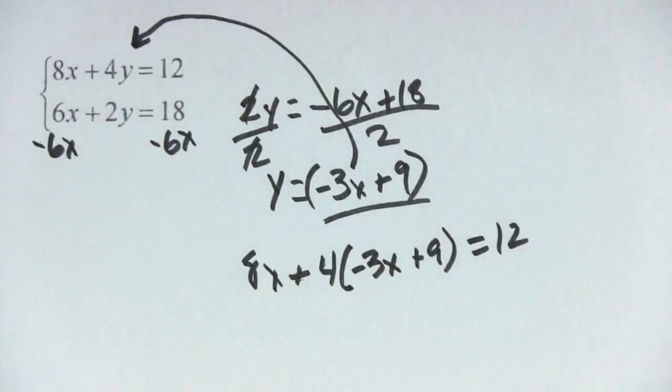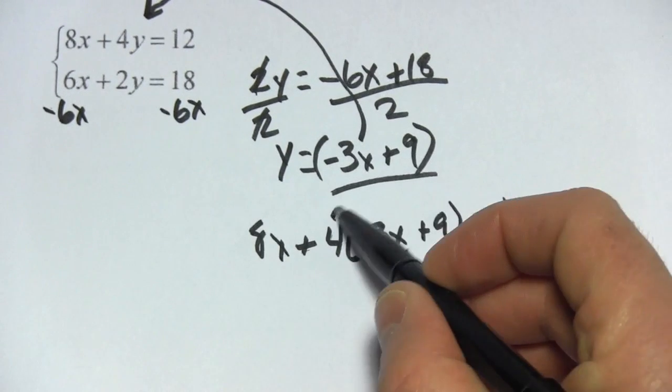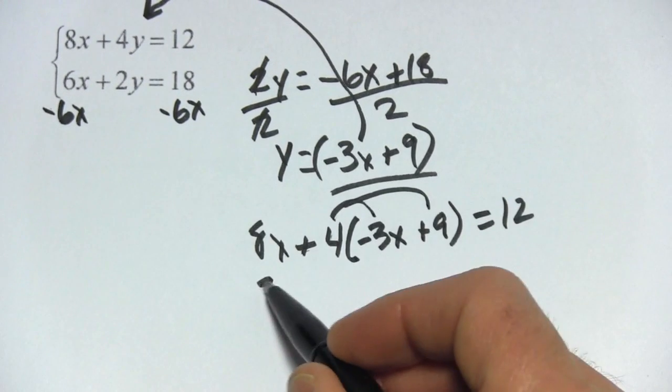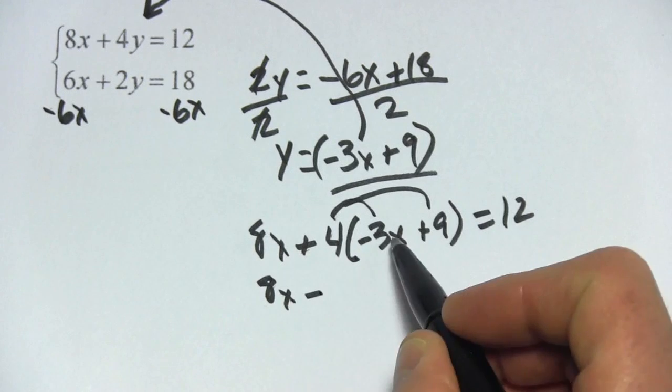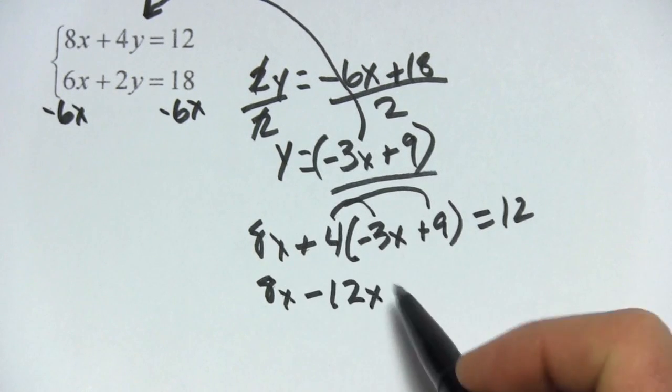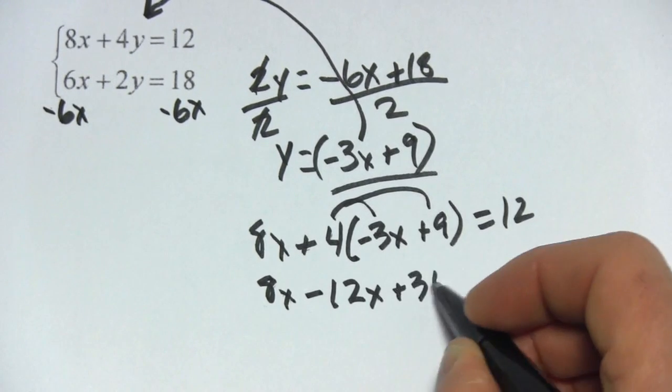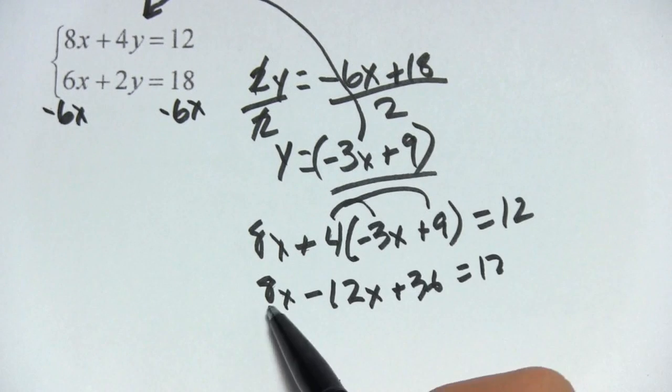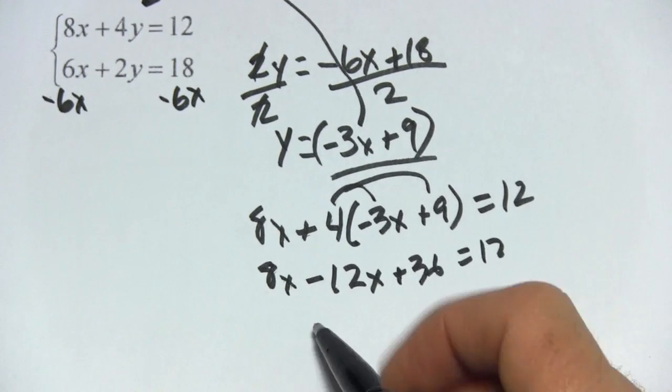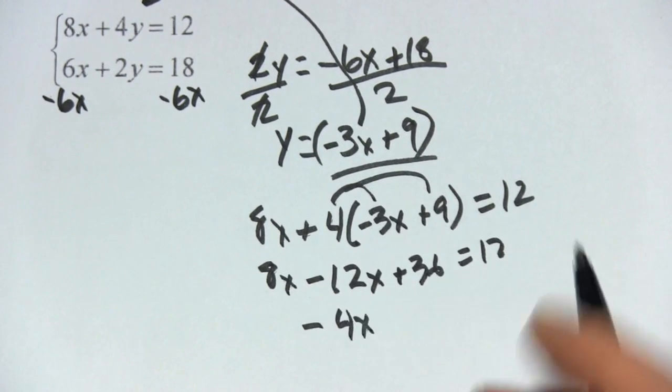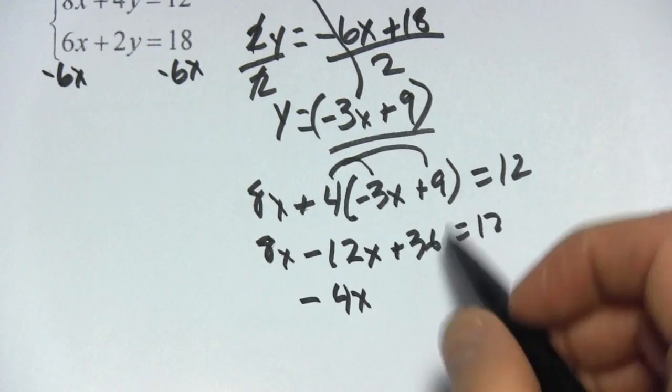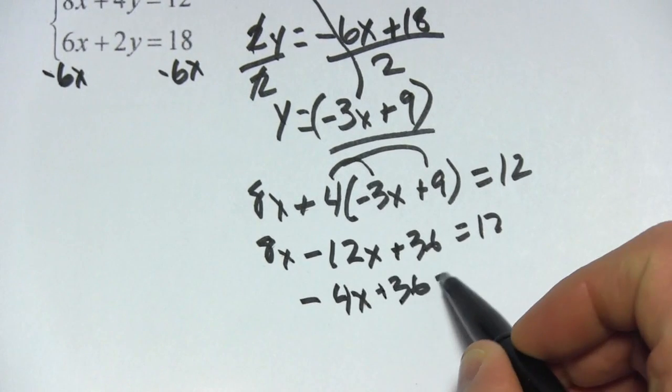Let's distribute the 4 first, so I'm going to have 8x minus 12x plus 36 equals 12. 8x minus 12x is a negative 4x, when we combine those like terms, plus 36 equals 12.